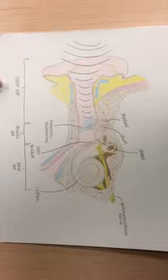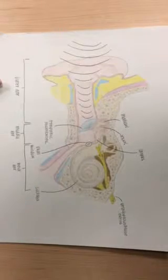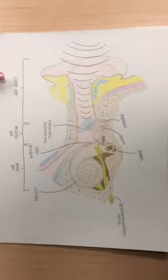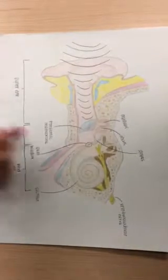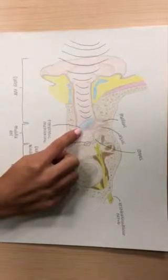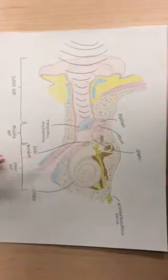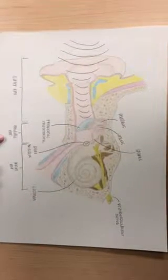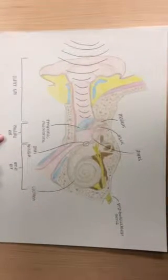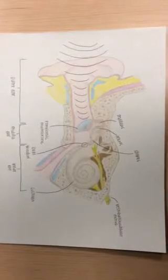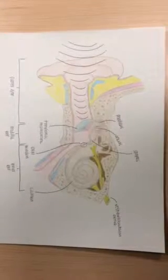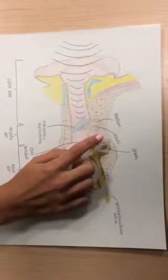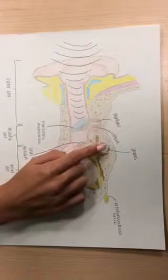The outer ear gathers the sound energy and focuses it on the tympanic membrane, or the eardrum. The middle ear collects the sound waves, which cause the eardrum to vibrate, which then vibrates the three bones of the ear: the malleus, the incus, and the stapes.